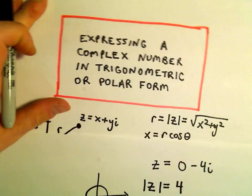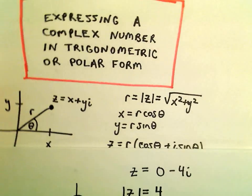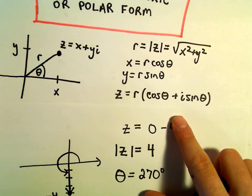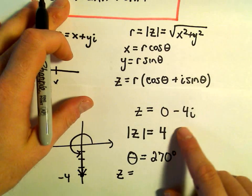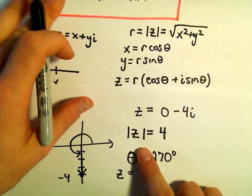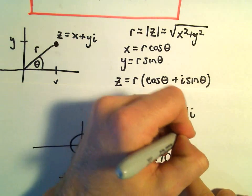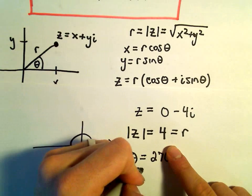So now we're pretty much there. We just have to fill in our formula. Again, it says z would be equal to r, which is our r value, again, is just the modulus. So our r value is just 4.